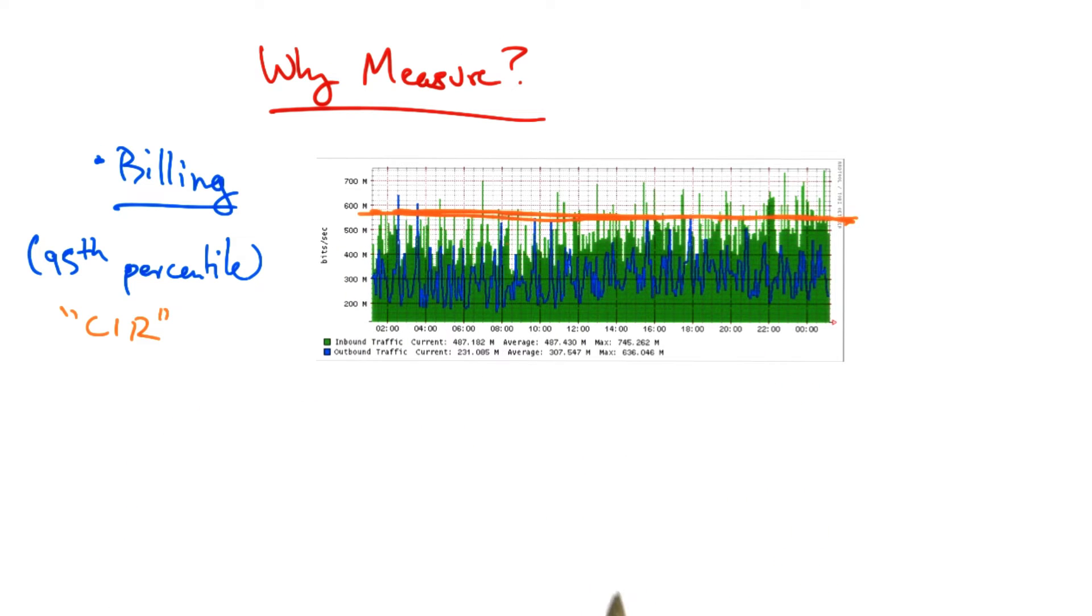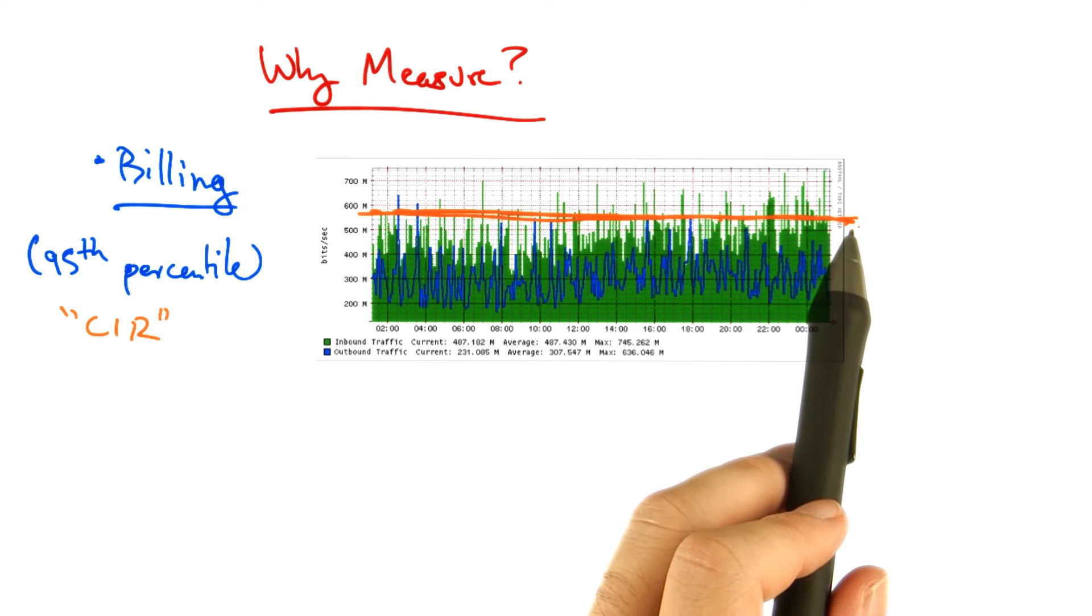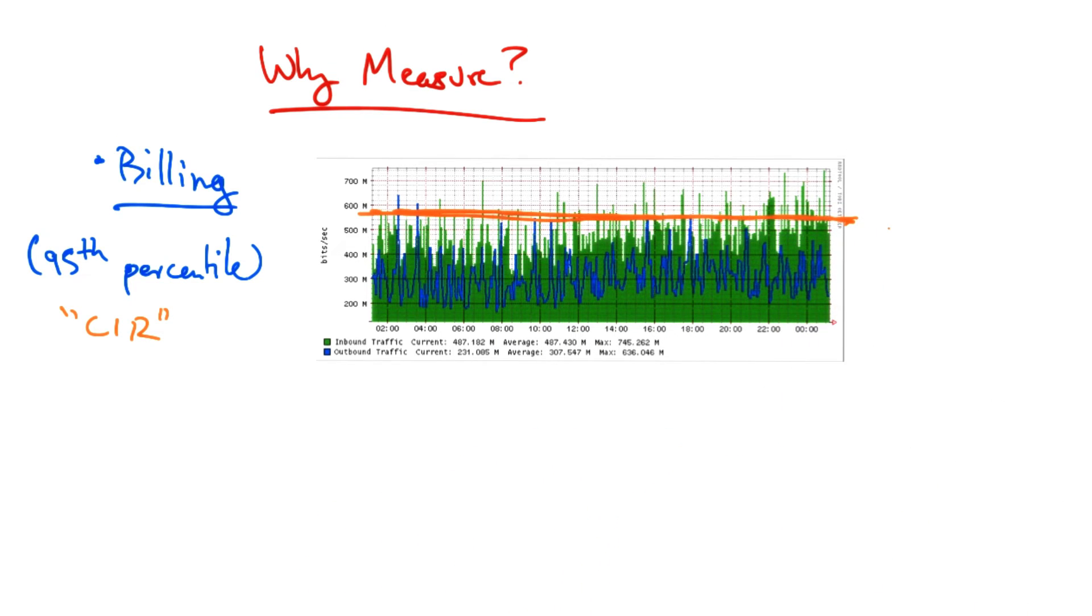A customer then may be billed on the 95th percentile of these five minute samples. So if we were to bill on the 95th percentile of inbound traffic, we might approximate that 95th percentile by the orange line I've drawn here. And the customer might be billed at this rate, even though they're allowed to sometimes burst at higher rates.